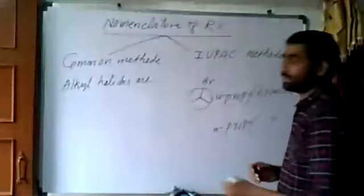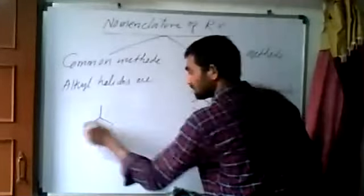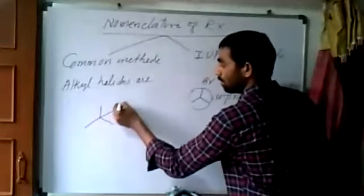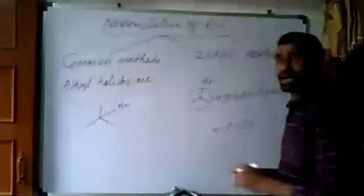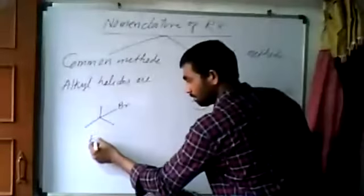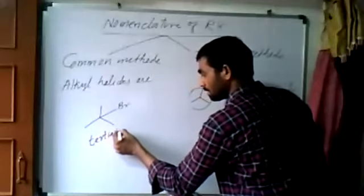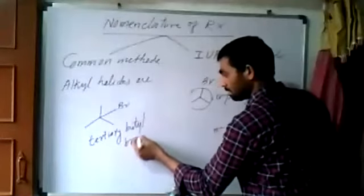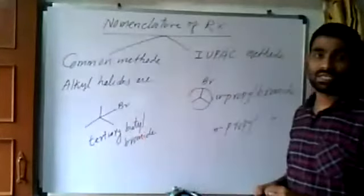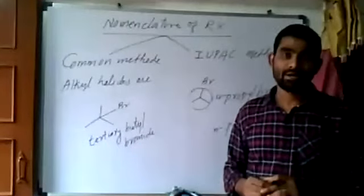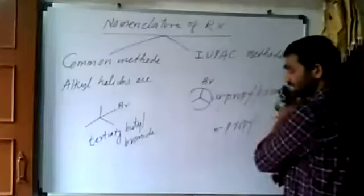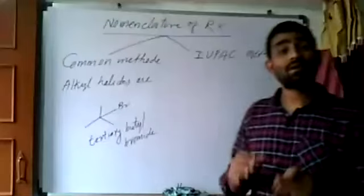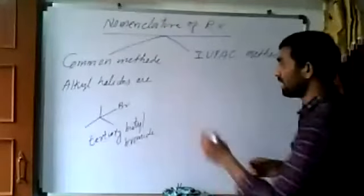Under this common method, if I write this is what? Isobutane. If I write bromine here at the tertiary carbon, this becomes tertiary butyl bromide. This is called as tertiary butyl bromide. One more example we will take here to understand the clear cut idea. To have a clear cut idea of common method.